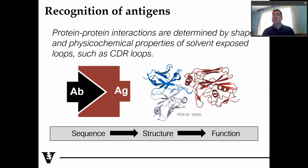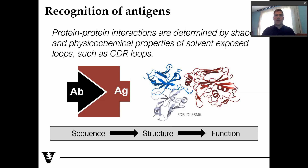And then in design processes, we can sort of go the other way. So we can take a particular function that we want — for example, we want an antibody to bind to a certain antigen, or we want to develop an antigen that can bind to a particular antibody. And then from that function, we determine what the structure of the complex is and then the loops of the antibody. And from that structure, we can now determine the sequence, and then from that sequence, we can go into the lab and hopefully produce an antibody or an antigen that has the desired function.